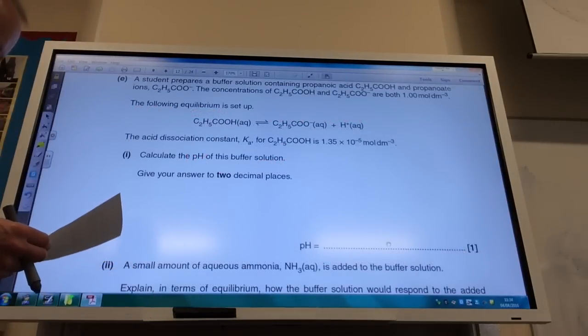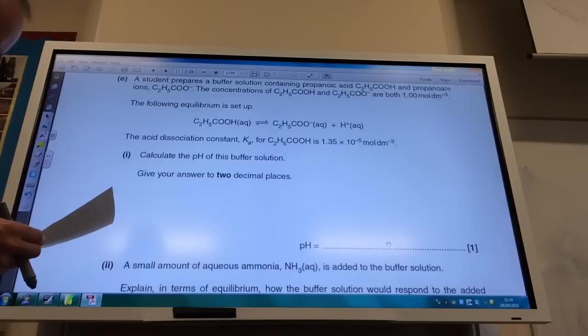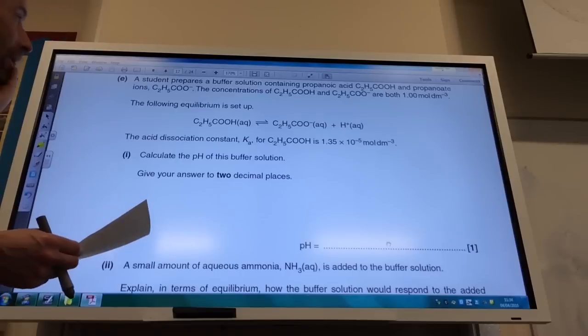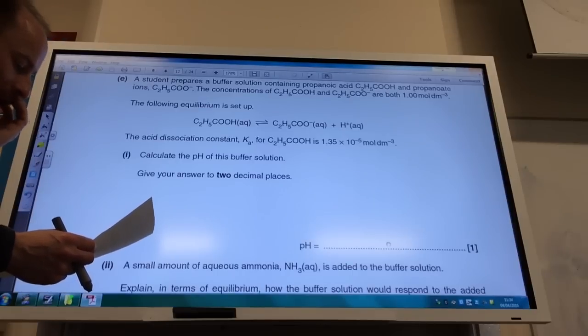Right, buffer time. A student prepared a buffer solution and the concentrations of both propanoic acid and propanoate are both one mole per decimeter cubed, so they're the same.